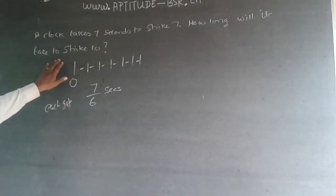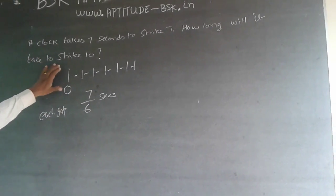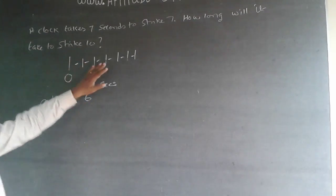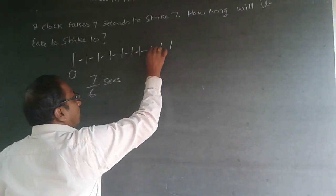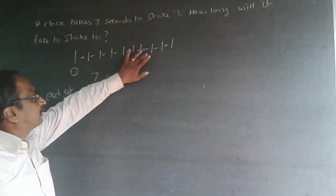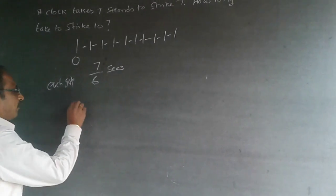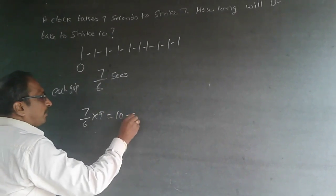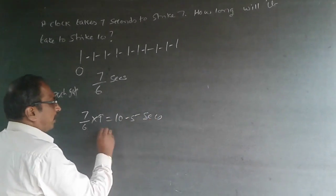Now the question is, how long will it take to strike 10? So when I am going to strike 10, the first one will be 0 again. Then this is 7, 8, 9, and 10. So I will have 3 more gaps. So I will have 1, 2, 3, 4, 5, 6, 7, 8, 9 gaps. So 7 by 6 into 9 will be 10.5 seconds. The answer is 10.5 seconds.